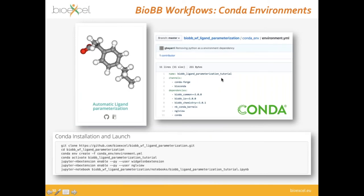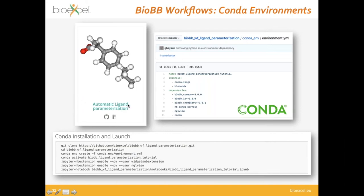Once you have your workflow finished in a Jupyter notebook, you can export it using Conda packages. For that you just need to create a YAML file called environment.yaml, specifying the dependencies — in this case three different building block modules: common, input-output, and chemistry, plus auxiliary libraries for inspecting intermediate results. Then with just one command — conda env create with this file — Conda will install everything needed to run this particular workflow on another computer. These simple steps are all you need to reproduce this workflow, which automatically parameterizes a ligand.